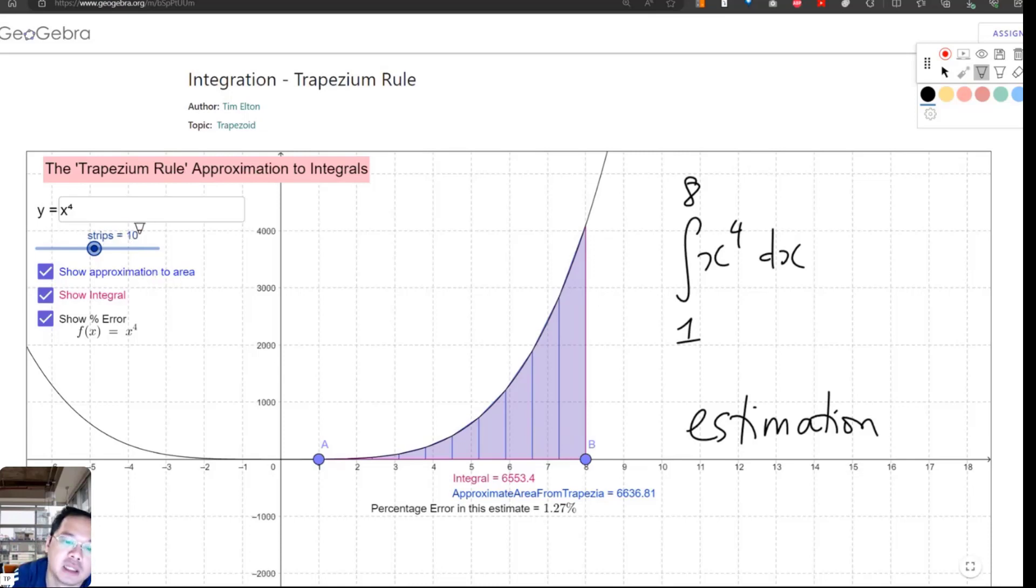[Vietnamese] Of course, it will never be absolutely accurate unless we divide into thousands, hundreds of thousands, then it becomes accurate. But no one can do that. Dividing to 10 is enough. In the problem we just did, they divided to 4. When divided into 4, we clearly see there's still quite a bit of excess, like it's off by about 10%, the deviation is 7.93%. If we increase to about 10 divisions, the deviation is only 1.27%, which is excellent. That's the trapezium rule.